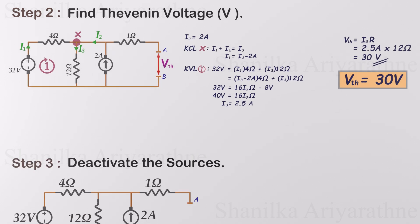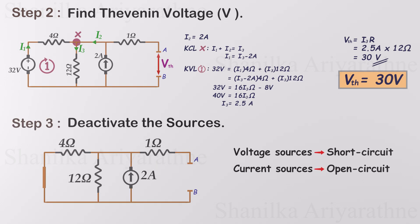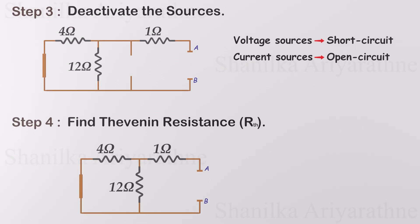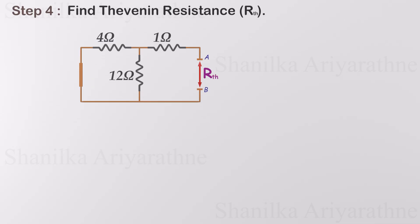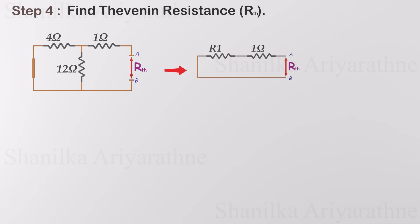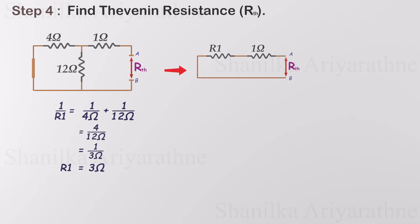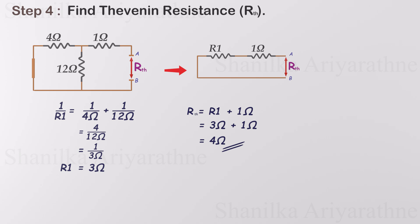The third step is deactivating the sources. Here we have to short circuit the voltage source and open the current source. Now we can calculate the Thevenin resistance. The 4 ohm and 12 ohm resistors are connected in parallel — let's solve that first. Finally, we can solve the series connected resistor. The total resistance is 4 ohms. This is our Thevenin resistance.